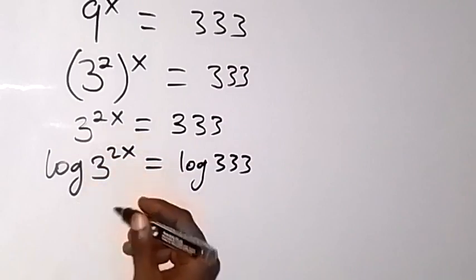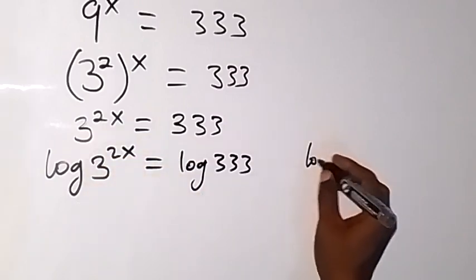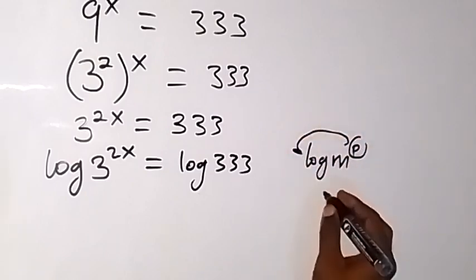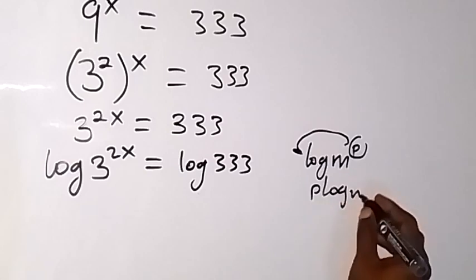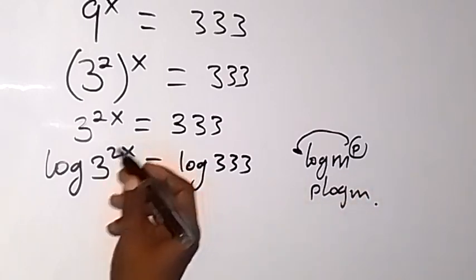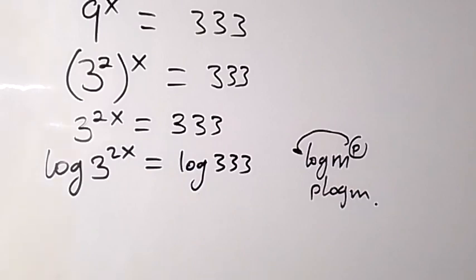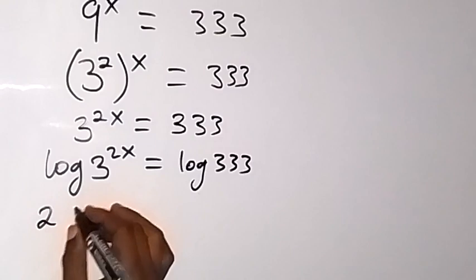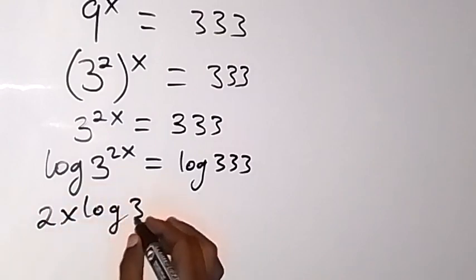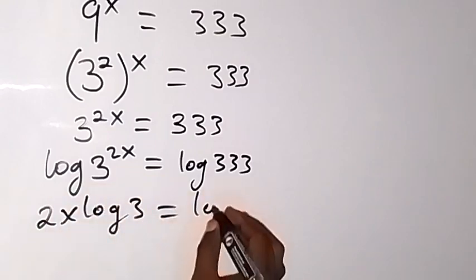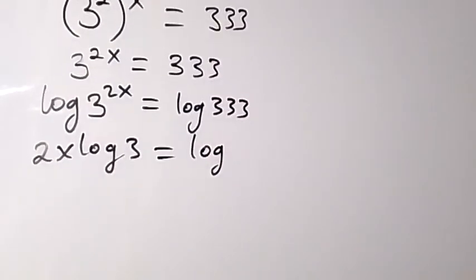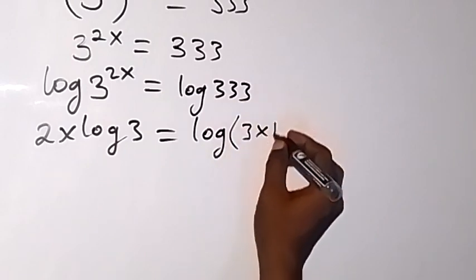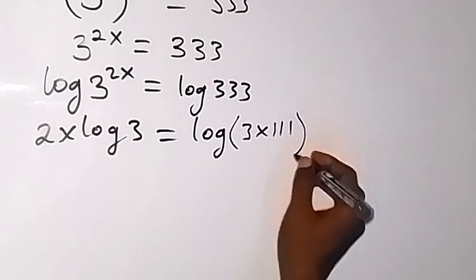From the law of logarithms, when we have log m raised to power p, this power can come to the back here. We have p log m. So we can take 2x to the back here. So that we have 2x log 3 gives us log, we can express 333 as 3 multiplied by 111.